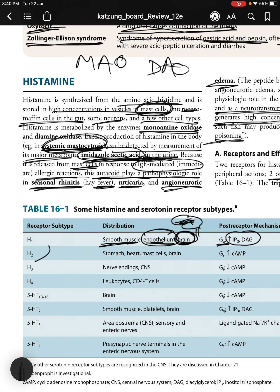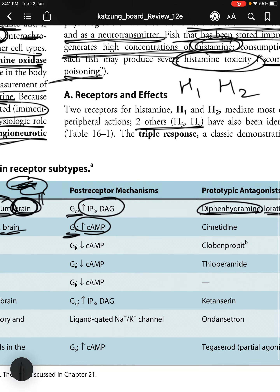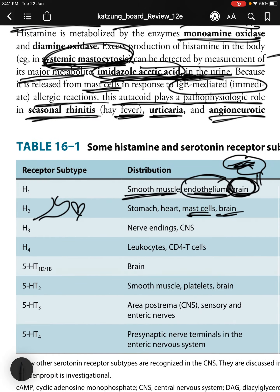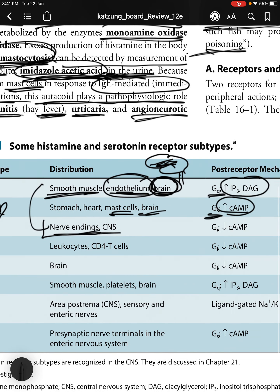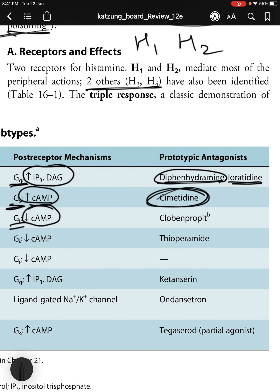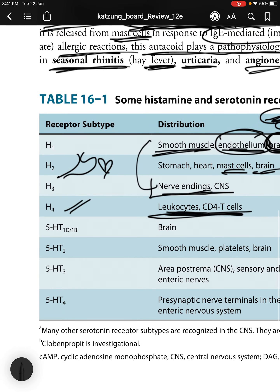H2 receptors are present in the stomach, heart, mast cells, and brain. It is a Gs-type receptor working by increasing cyclic AMP levels; the prototypic antagonist is cimetidine. H3 receptors are present in nerve endings and CNS; they are Gi-coupled, decreasing intracellular cAMP; the prototypic antagonist is clobenpropit. H4 receptors are distributed in leukocytes and CD4 T cells; also Gi-coupled, decreasing cyclic AMP; thioperamide is a prototypic antagonist.